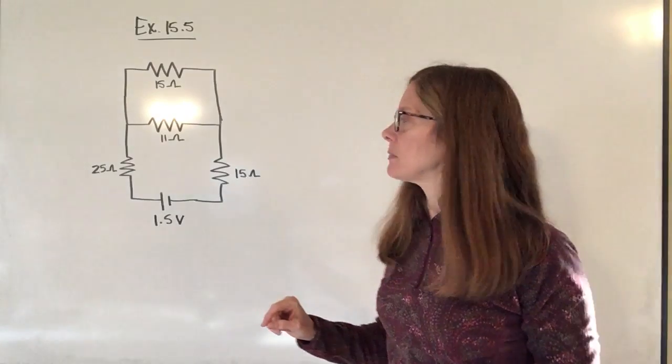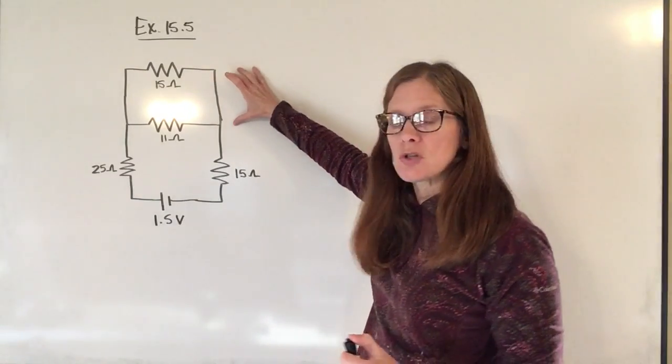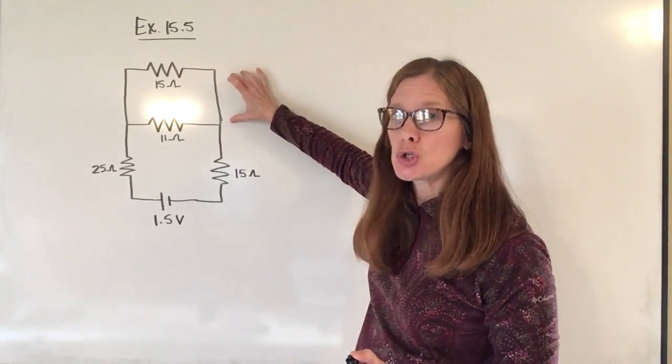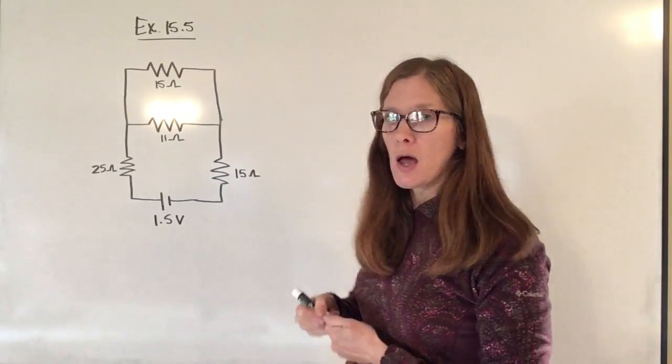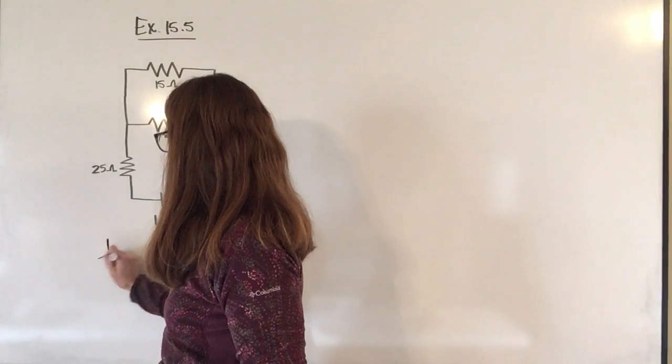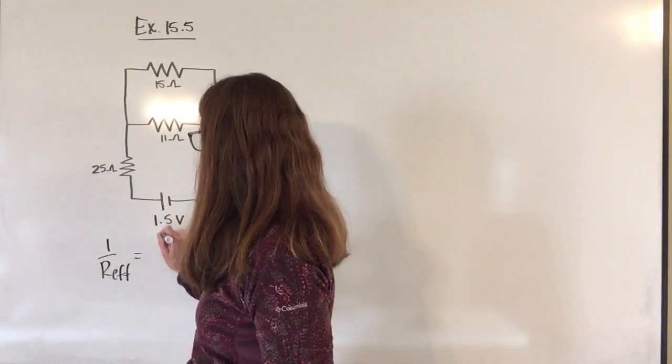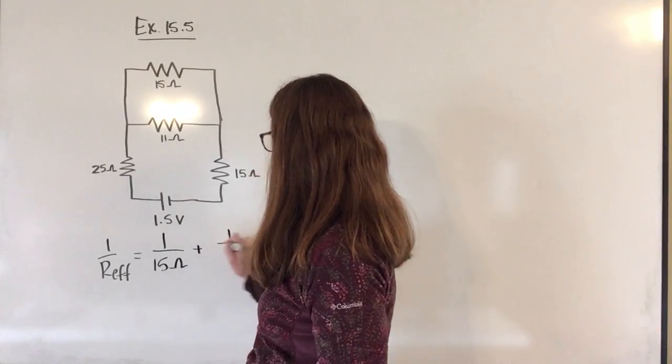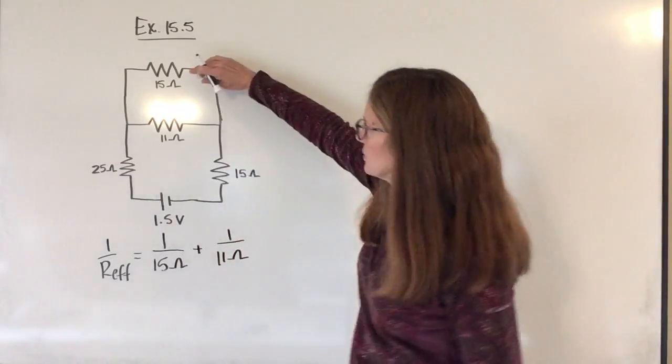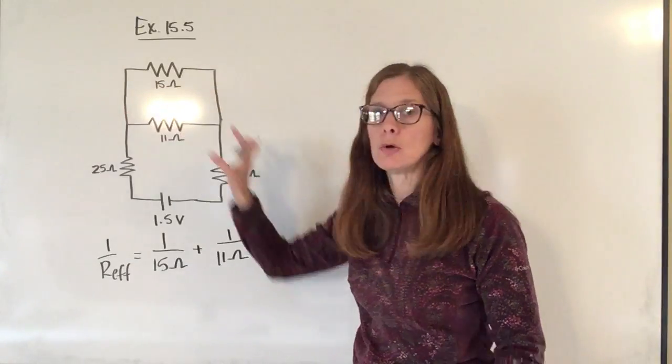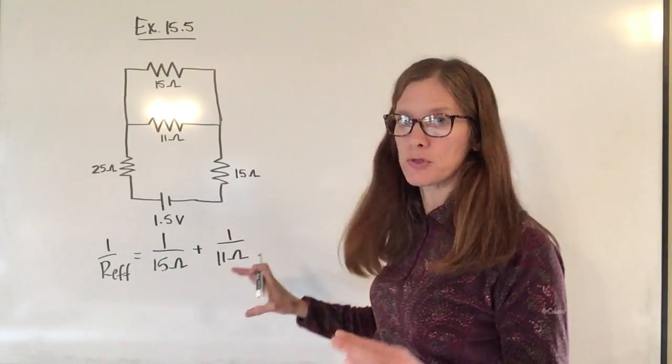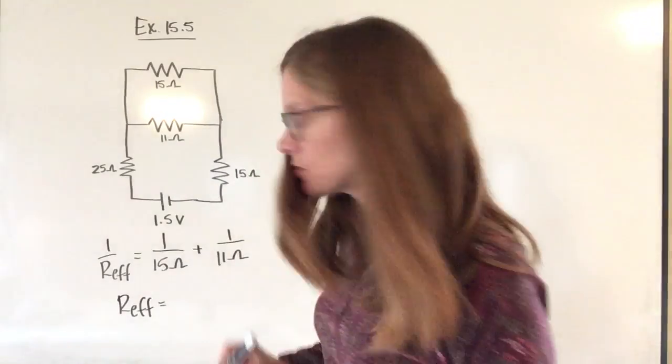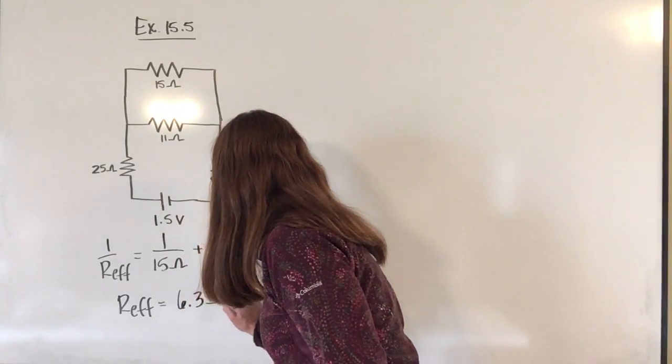So the first thing that I'm going to have to do is I'm going to take these two resistors that are hooked up in parallel to one another and I'm going to calculate what the effective resistance is for these two right here. So since they are hooked up in parallel, I'm going to be using the equation with the reciprocals in it. So I'm going to have one over 15 ohms plus one over 11 ohms. So it's this one and this one because I want to reduce these two to one resistance so I can figure out what the whole circuit is going to look like. So that means that the effective resistance for that piece is going to be 6.3 ohms.